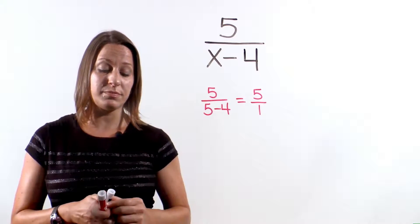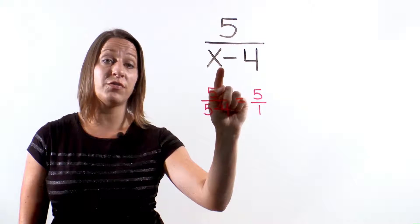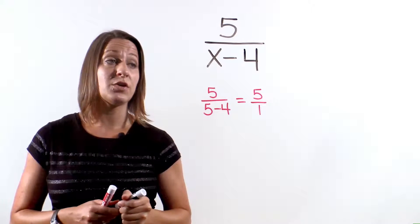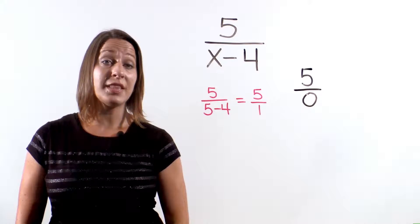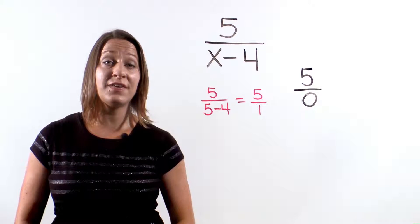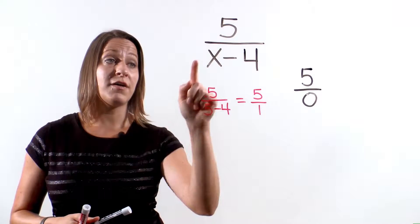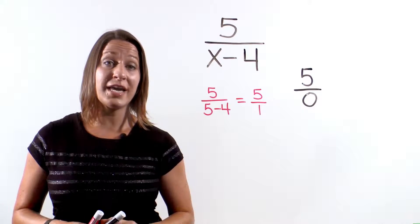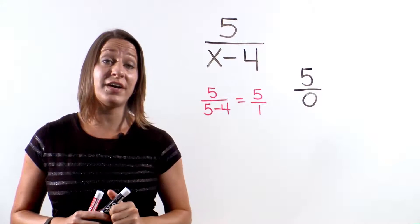When you are dealing with fractions, if the bottom value of the fraction is equal to 0, that fraction is called undefined. For example, 5 divided by 0 is impossible — that's undefined. You cannot take the number 5 and divide it into 0 groups. So if we want to find the domain of 5 over x minus 4, it is all real numbers except the one number that makes the denominator equal 0.